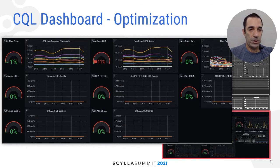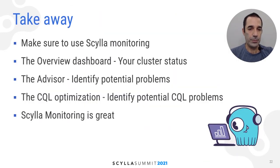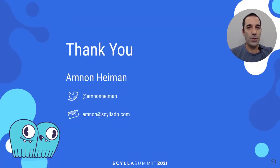The CQL optimization part is not new and was a harbinger of the advisor approach. All those gauges indicate potential problems. For example, on the upper left corner we see the percentage of queries that are not prepared — unprepared statements should be avoided, and if it starts going up, you should check your application and modify it accordingly. To wrap it all up, Scylla's monitoring advisor approach focuses on actionable knowledge. In the upcoming release, we will see more of it with more knowledge rather than just information. Scylla monitoring is great — it's open source, and if you're not using it yet, you should. Thank you everyone for participating.